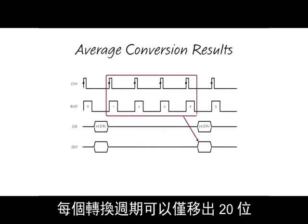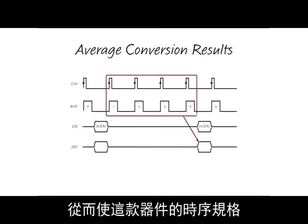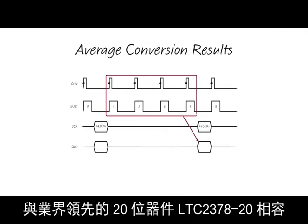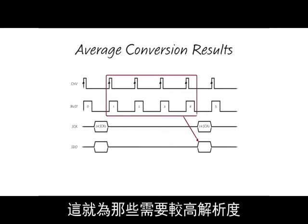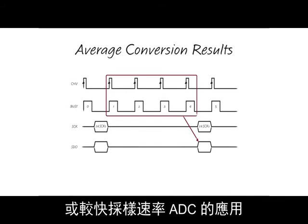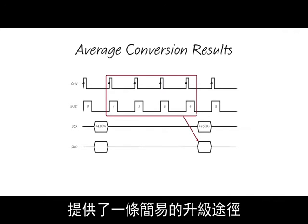It is possible to shift out only 20 bits every conversion cycle, making this device timing compatible with the industry-leading 20-bit LTC 2378-20, which provides an easy upgrade path for those needing a higher resolution or faster sampling ADC.